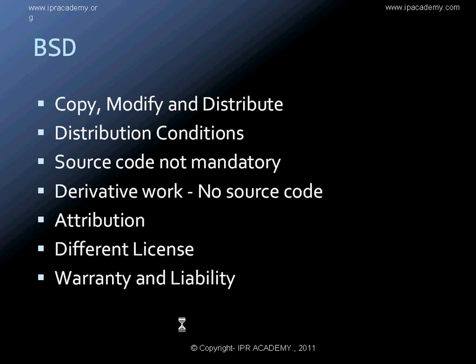Coming to the last license, which is the BSD license — this is the most flexible license and the one most sought after by corporates. It provides the right to copy, modify, distribute, and redistribute with just two basic distribution conditions. The first condition is that notices with respect to authorship and copyright ownership must be maintained intact. The second condition is that the disclaimer of warranty and indemnity must be maintained or provided in the software during distribution. As long as these two conditions are satisfied, the software can be modified and distributed in any manner, and the original version of a BSD software can even be distributed under a proprietary license.